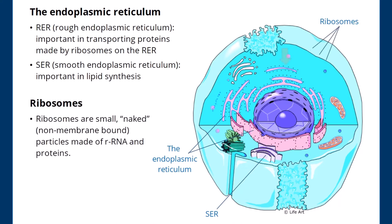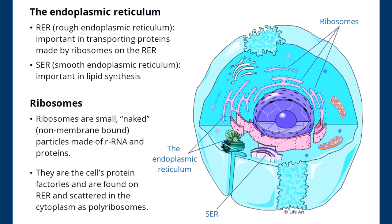Ribosomes are small, naked, non-membrane-bound particles made of rRNA and proteins. They're the cell's protein factories and are found on RER and scattered in the cytoplasm as polyribosomes.